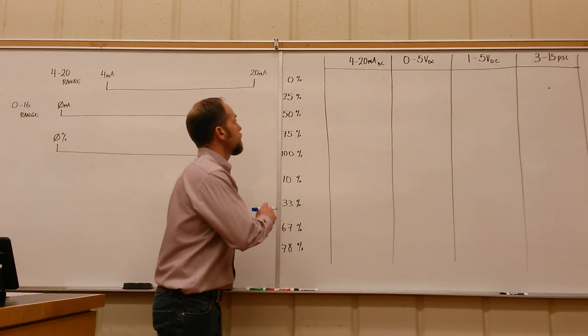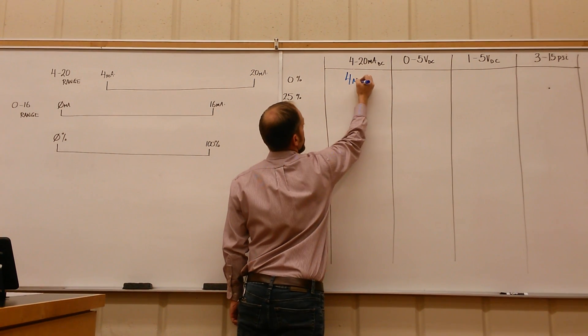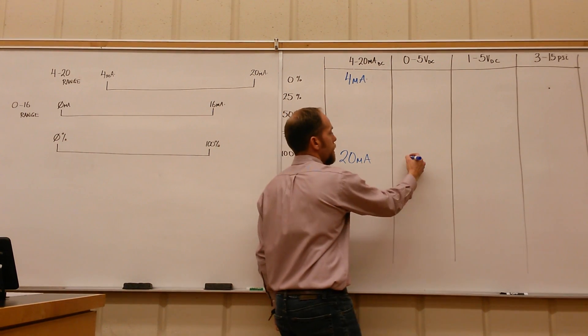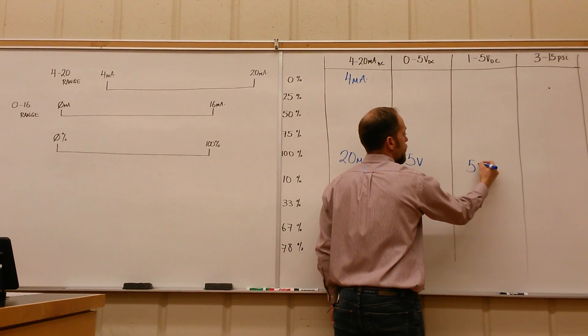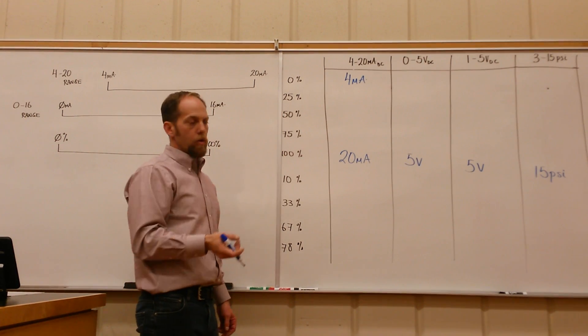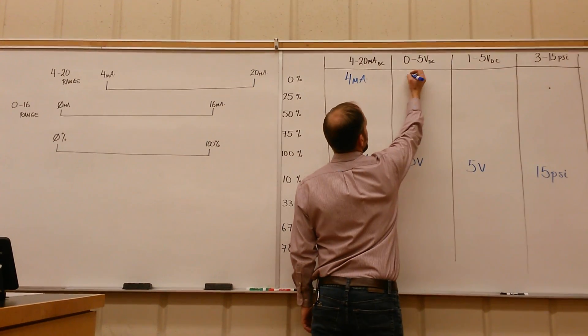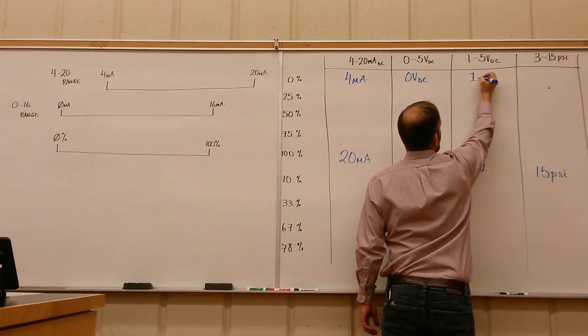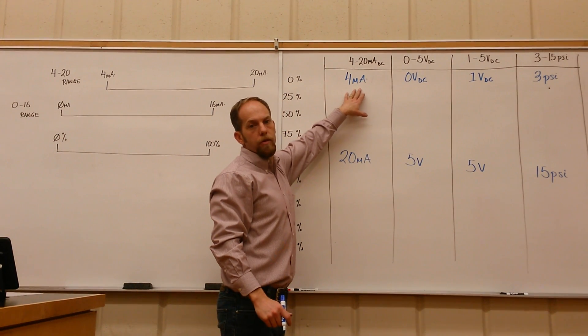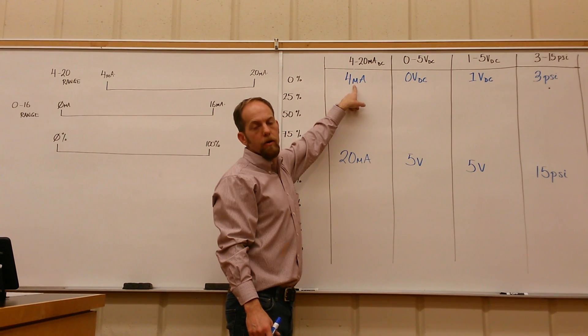So let's see if we can get our heads around this curve and the percentages and how they relate to each of these signals. We got 4 to 20 milliamps. Obviously the lowest value is 4 milliamps, and the highest value is 20 milliamps. If we go across here then, the highest portion of the range: 5 volts, 5 volts here as well, and 15 psi would correspond to 100%. The lowest value is obviously here 0 volts DC. This guy has an elevated 0 of 1 volt DC, and this guy has an elevated 0 of 3 psi.